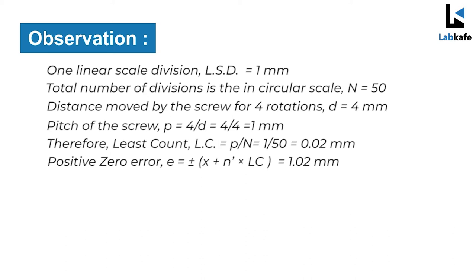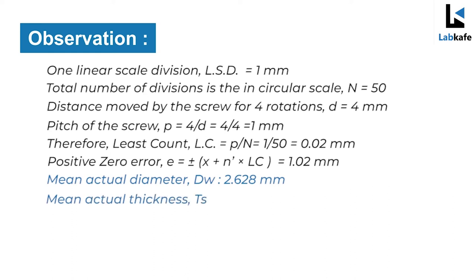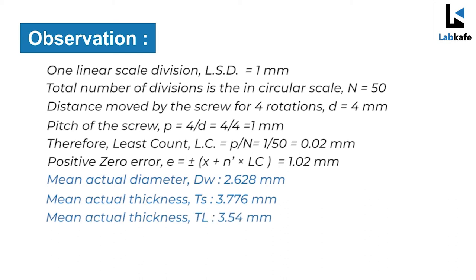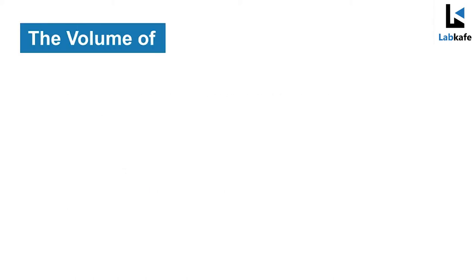The positive zero error equals 1.02 mm. The mean actual diameter of the wire dw equals 2.628 mm. The mean actual thickness of the sheet t equals 3.776 mm. The mean actual thickness of the irregular lamina equals 3.55 mm.